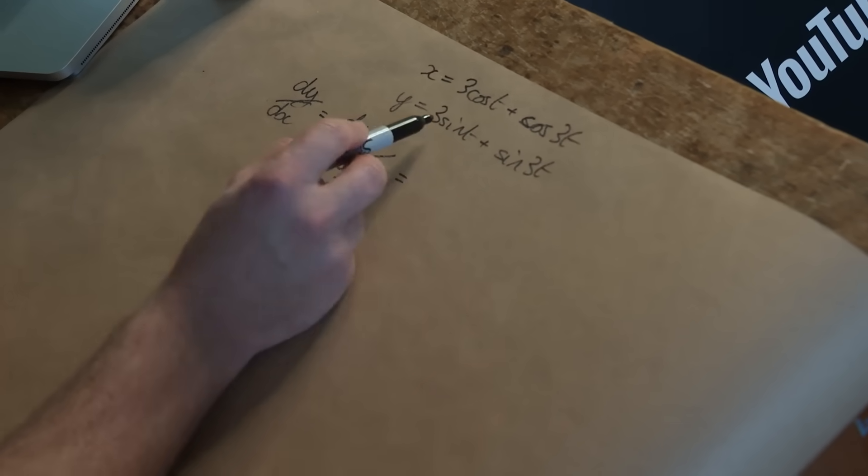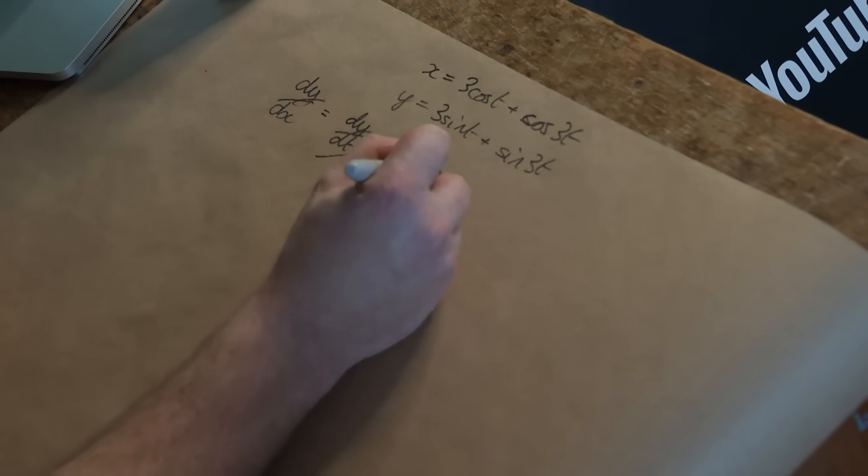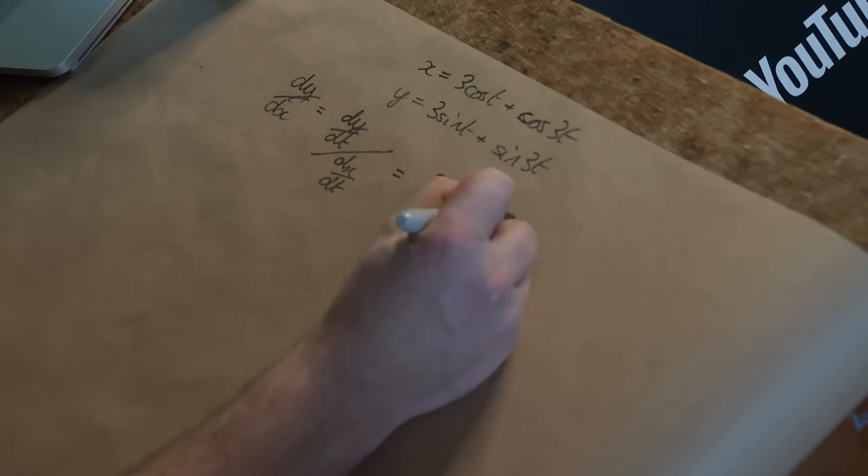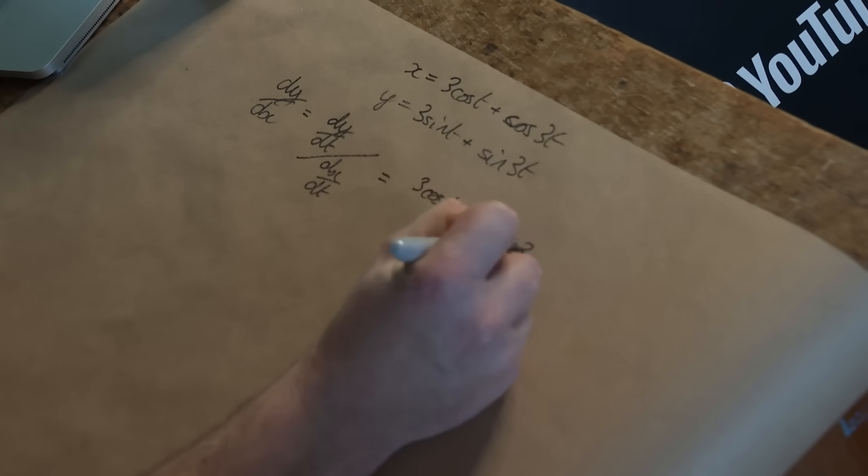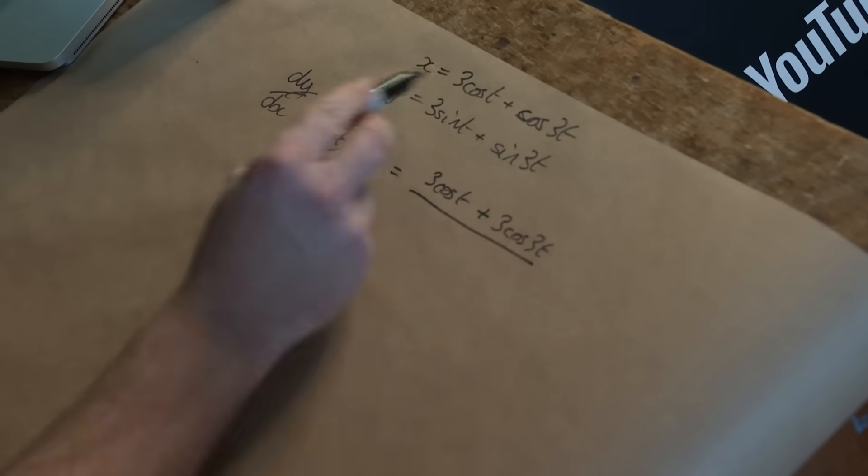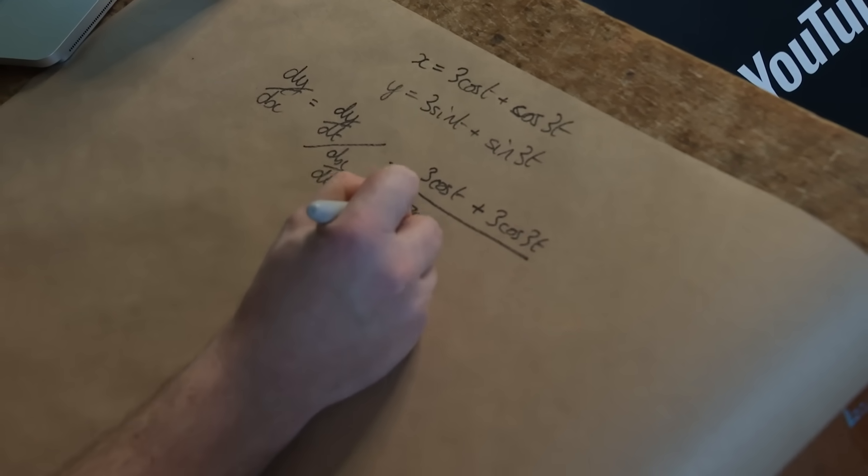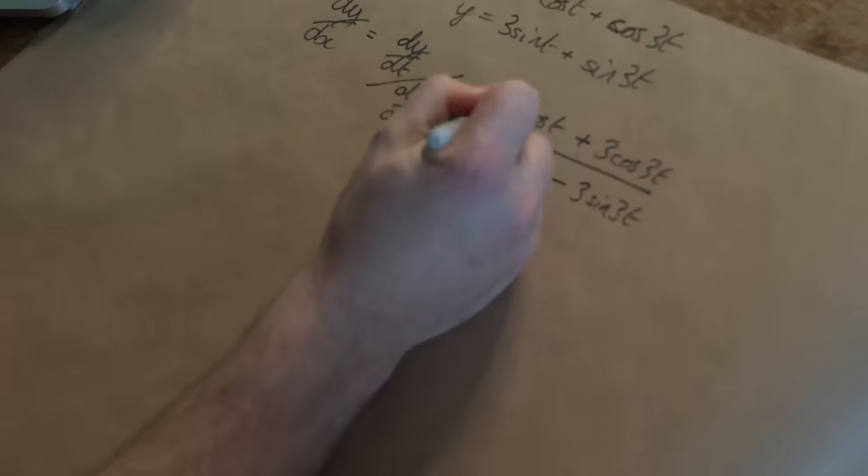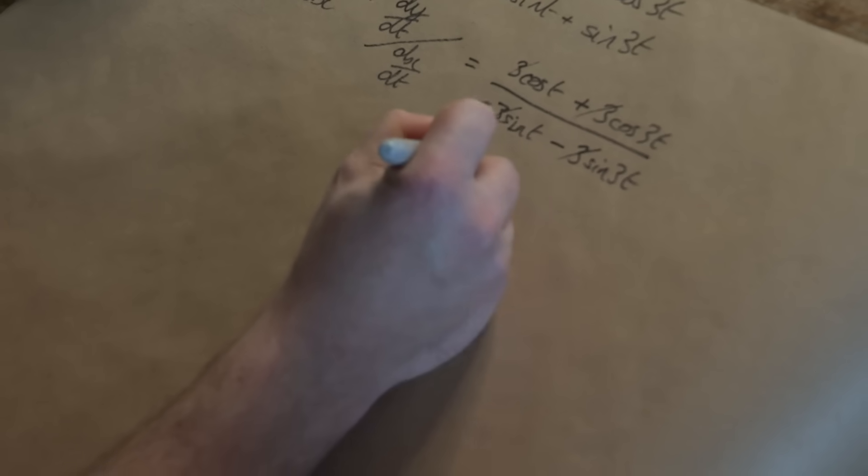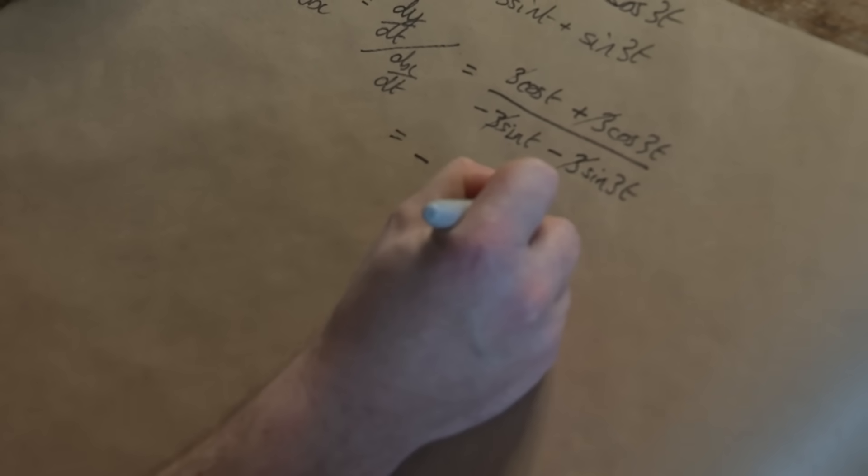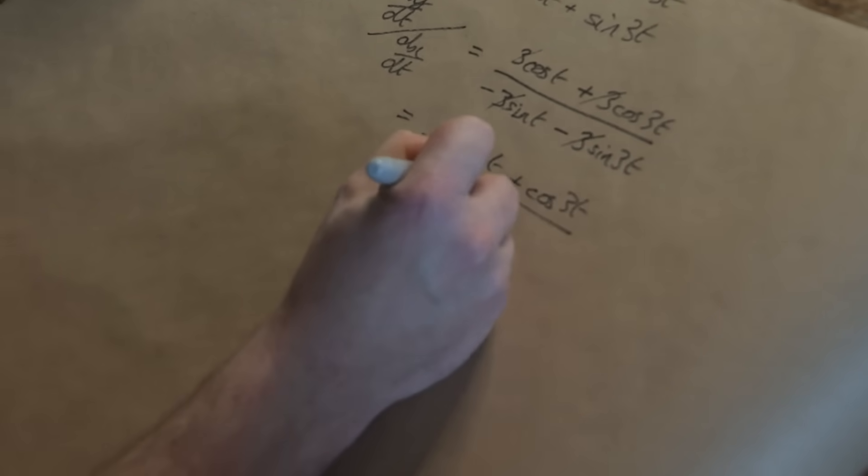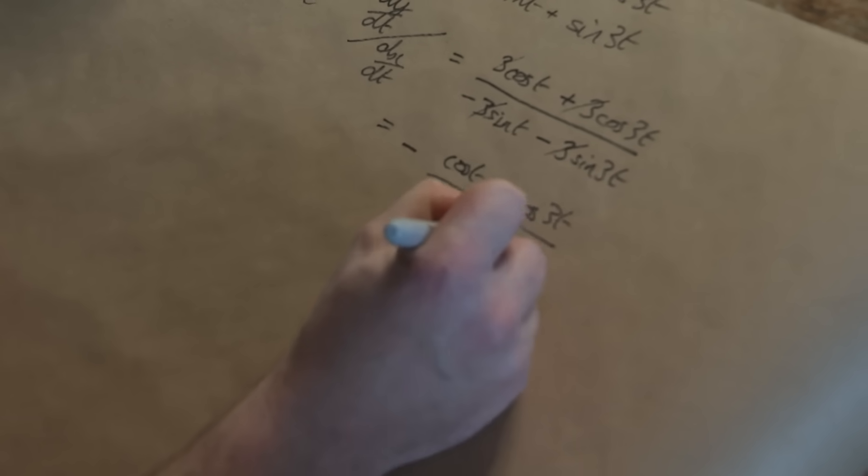So I need to do dy by dt, differentiate this with respect to t. That's going to become 3 cosine t plus 3 cosine 3t. That's on top. I've got to divide that by the differential of this. That's going to become negative 3 sine t. There's a bunch of 3's I can cancel. There's a factor of 3 in everything there. I'm going to take the negative sign out and this is cosine t plus cosine 3t over sine t plus sine 3t.